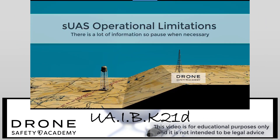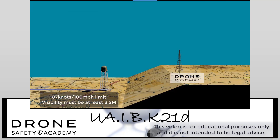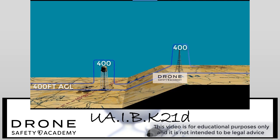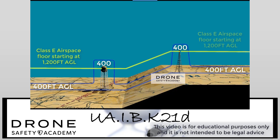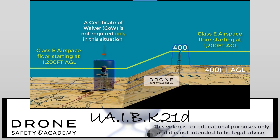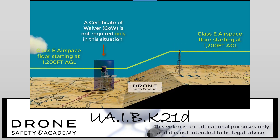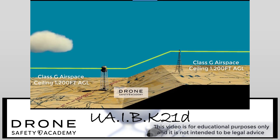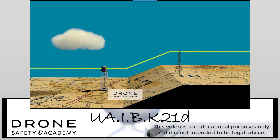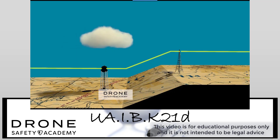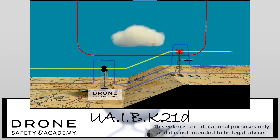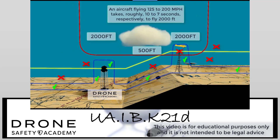Basic operational limitations for small unmanned aircraft. There's a lot of information in this example, so pause when necessary. The unmanned aircraft will follow this general flight path. The speed limit for an unmanned aircraft is 87 knots or 100 miles per hour, and the visibility must be at least 3 statute miles from the person manipulating the controls. This line illustrates the operational limitations for altitude, which is 400 feet AGL. This line also demonstrates the altitude limitations around a structure, which is 400 feet above the structure within a 400 foot radius. You can see the cloud approaching the structure on the right. The operational limitations around a cloud are: no closer than 2,000 feet horizontally to a cloud, no closer than 500 feet to a cloud from below, and no flying above a cloud. These limitations help pilots better identify hazards and yield right-of-way.